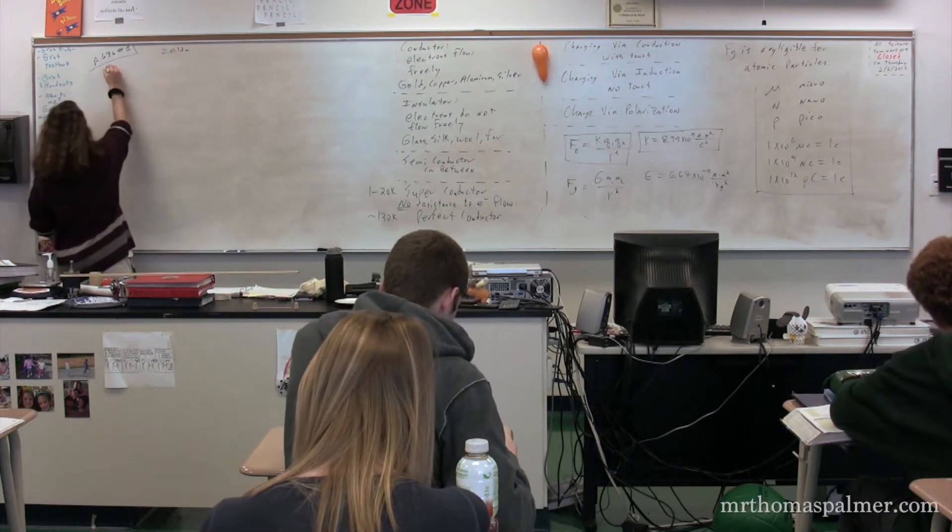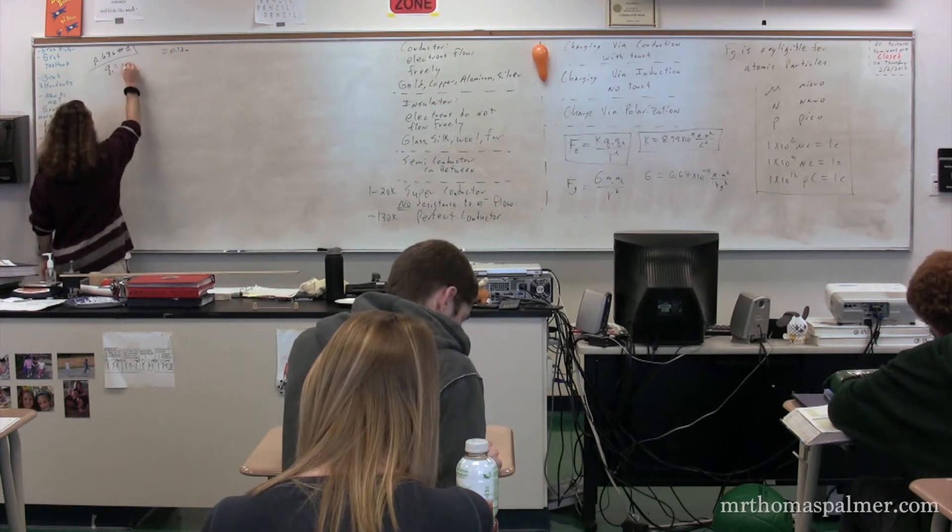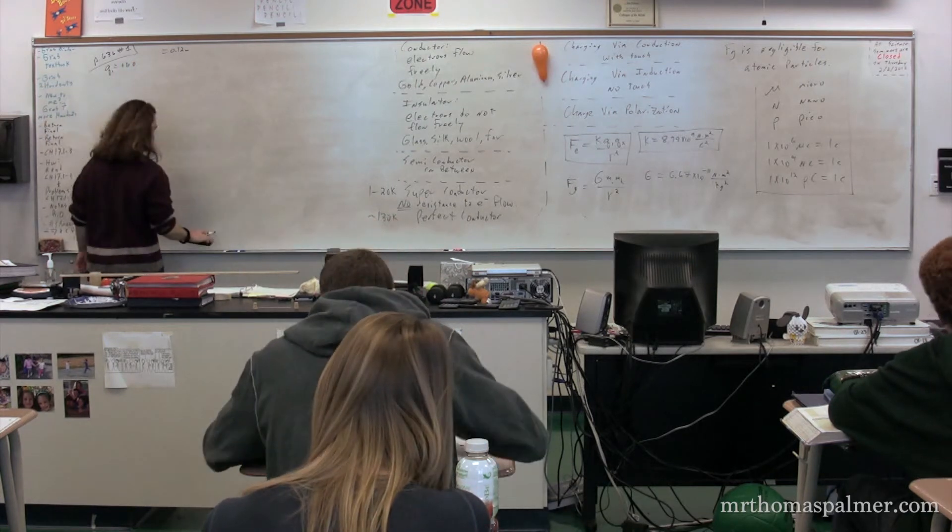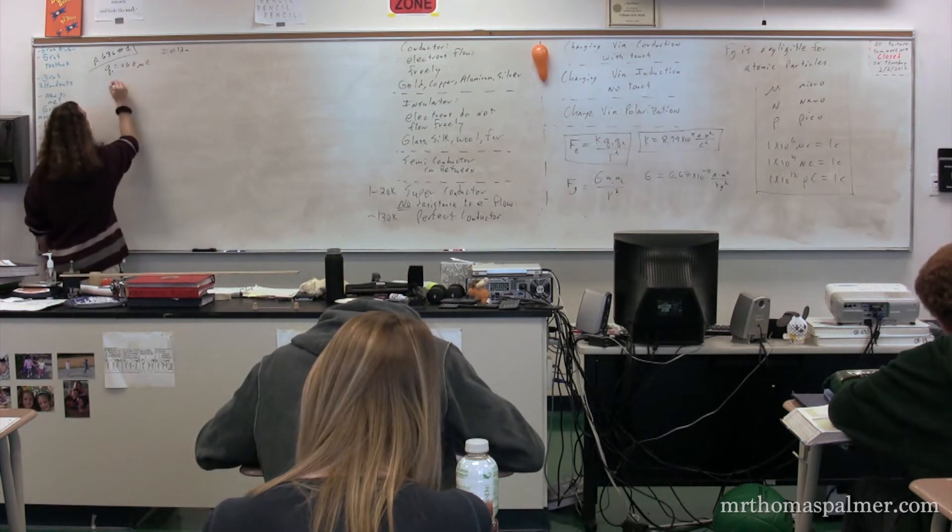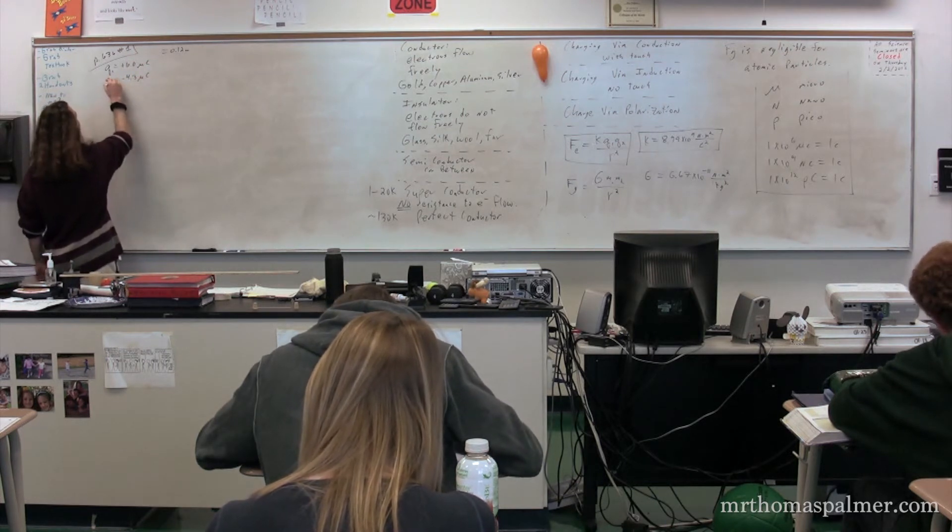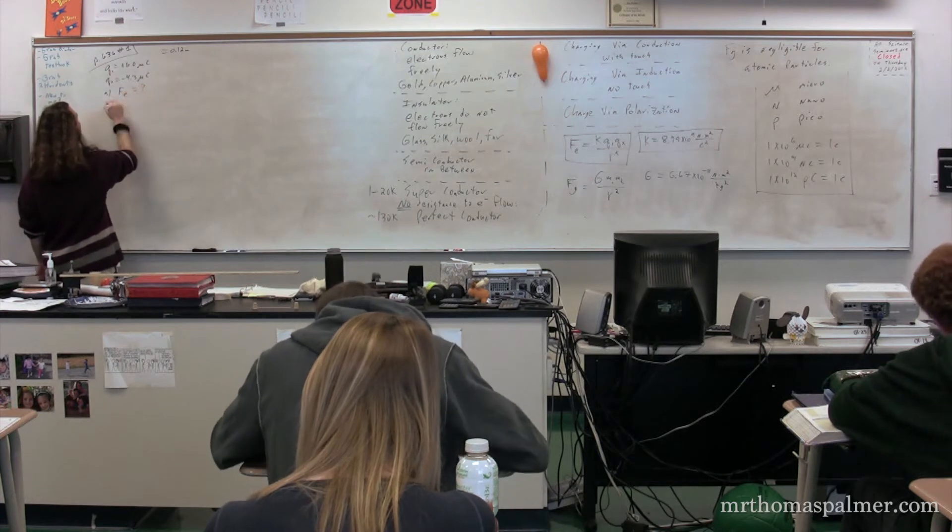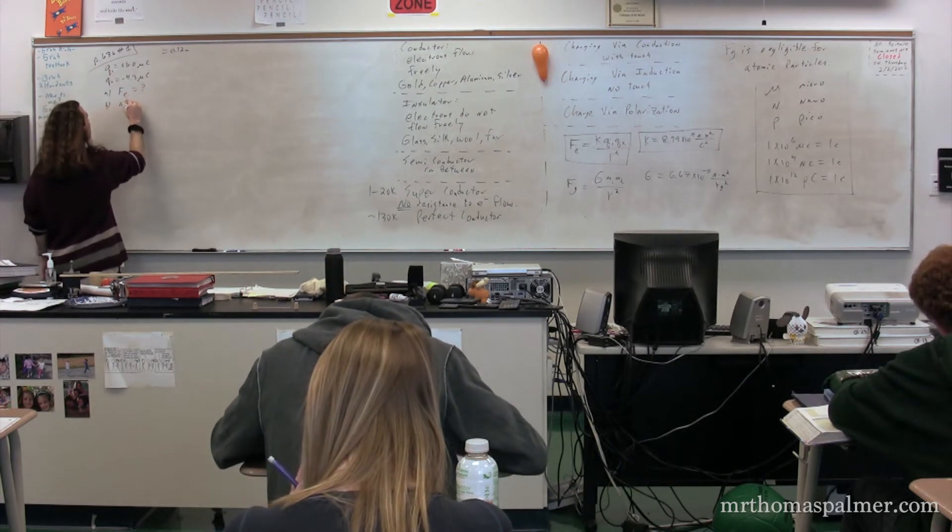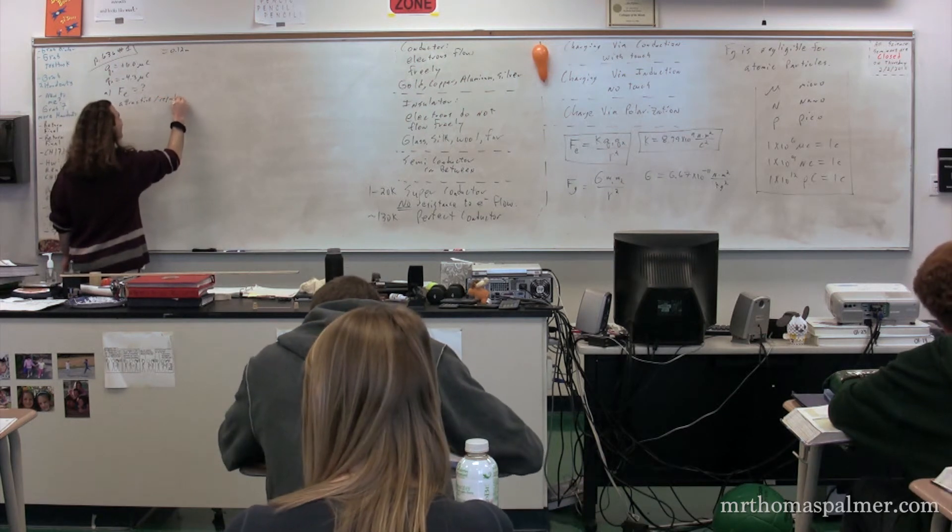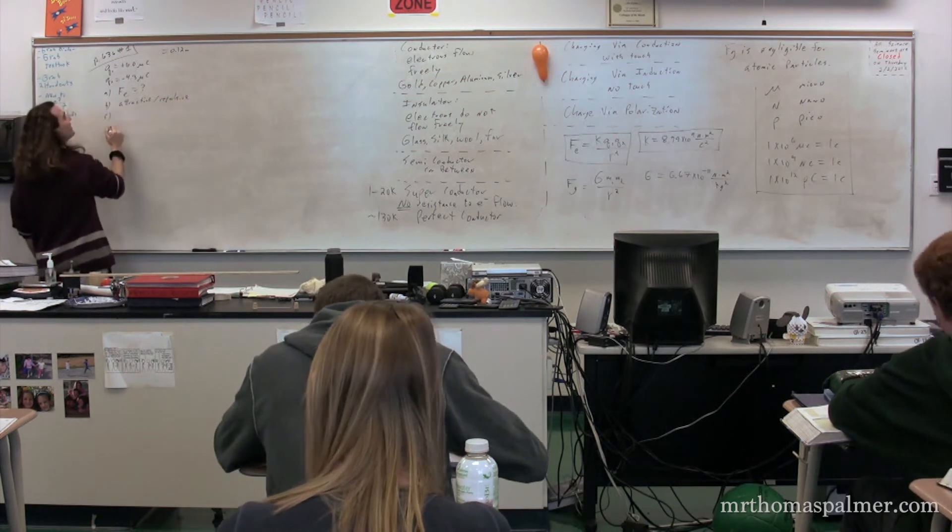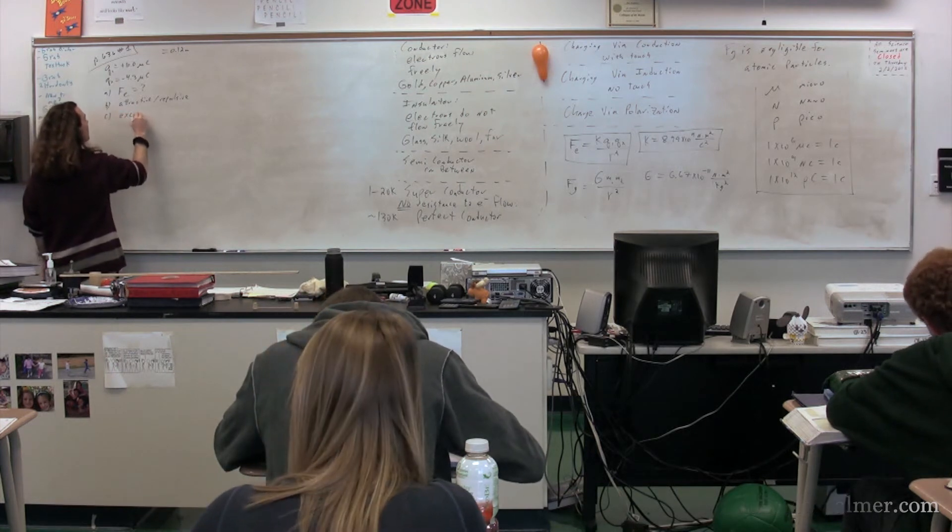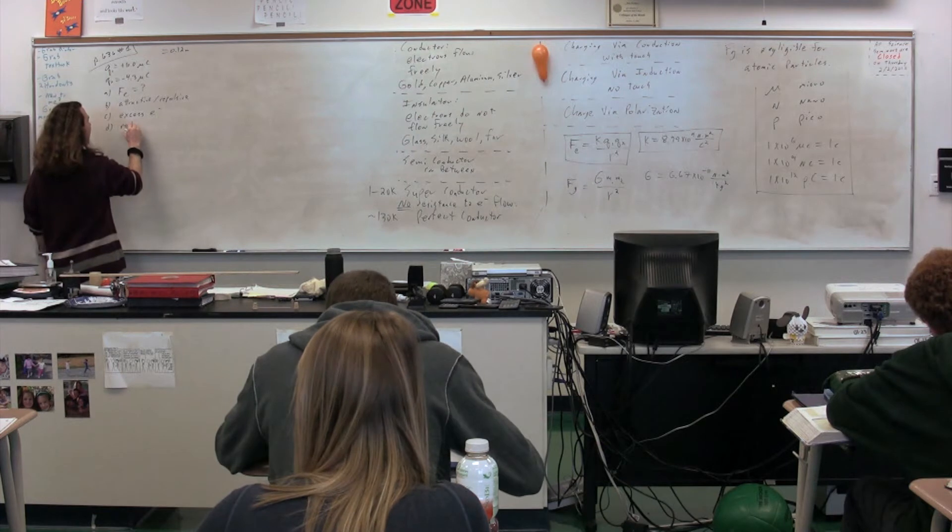A small cork with an excess charge of plus 6.0 micro coulombs is placed 0.12 meters from another cork, which carries a charge of negative 4.3 micro coulombs. Part A: What is the magnitude of the electric force between the corks? Part B: Is this force attractive or repulsive? Part C: How many excess electrons are on the negative cork? And Part D: How many electrons has the positive cork lost?